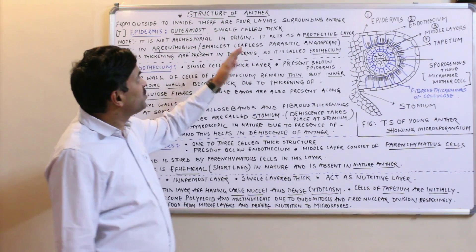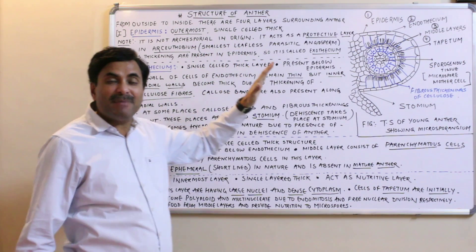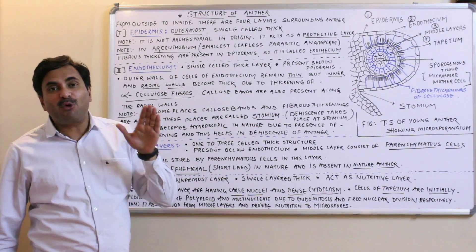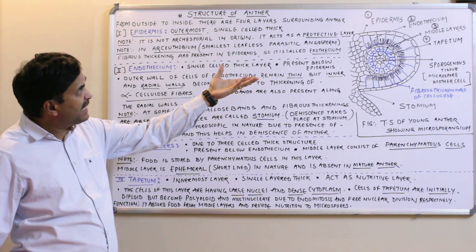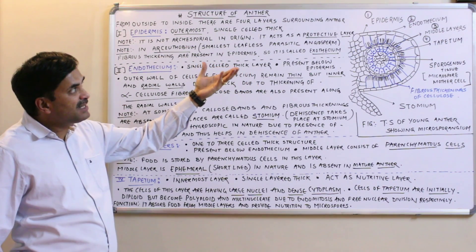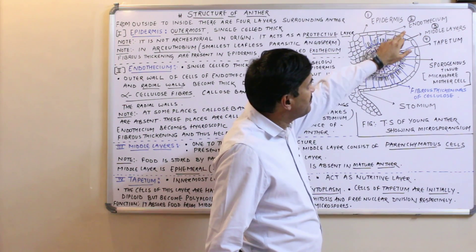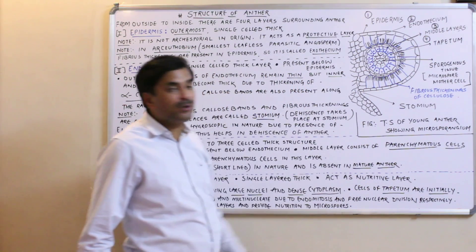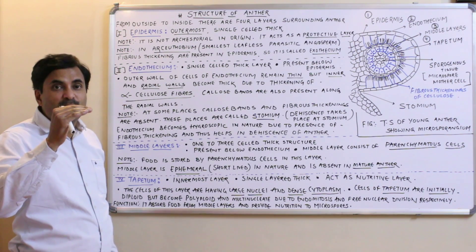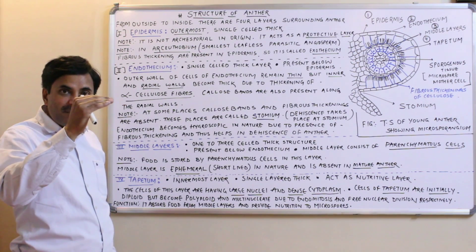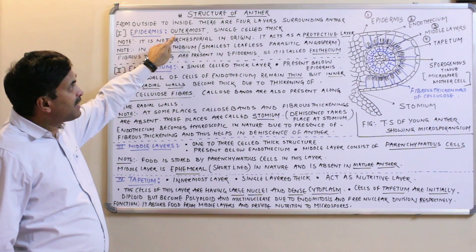Today we are going to study about the structure of the anther. The anther is surrounded by four layers, also called wall layers or parietal layers. From outside to inside, the anther is surrounded by: number one, epidermis; number two, endothecium; number three, middle layers; and number four, tapetum.